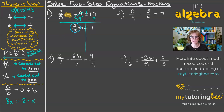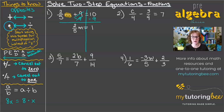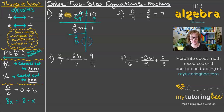That 2/5 is being multiplied times m, so let's think about how to undo that multiplication. We know that the opposite of multiplication is division, so I could write this as dividing by 2/5.